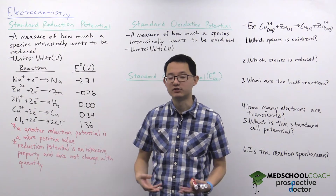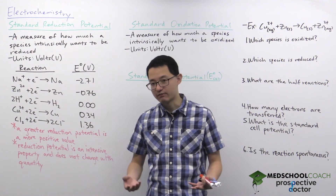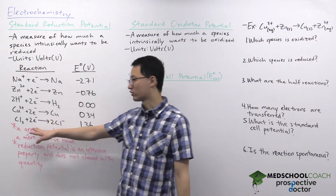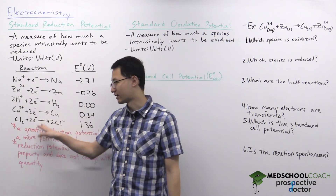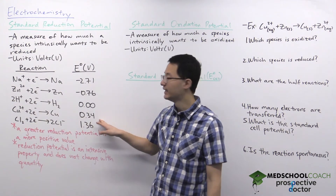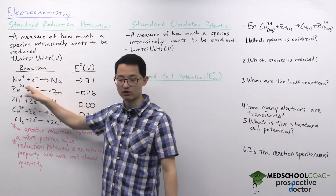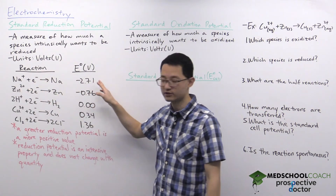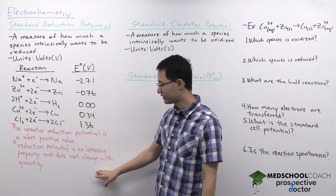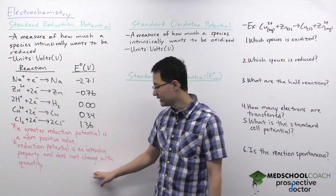The standard reduction potential is also related to electronegativity. Electronegativity is the ability of an atom to attract electrons to itself in a covalent bond — essentially a measure of how much an atom wants electrons. Since chlorine is very electronegative, it's not surprising that it really wants to gain electrons. Sodium has very low electronegativity, so it's also not surprising that it doesn't want to gain electrons.